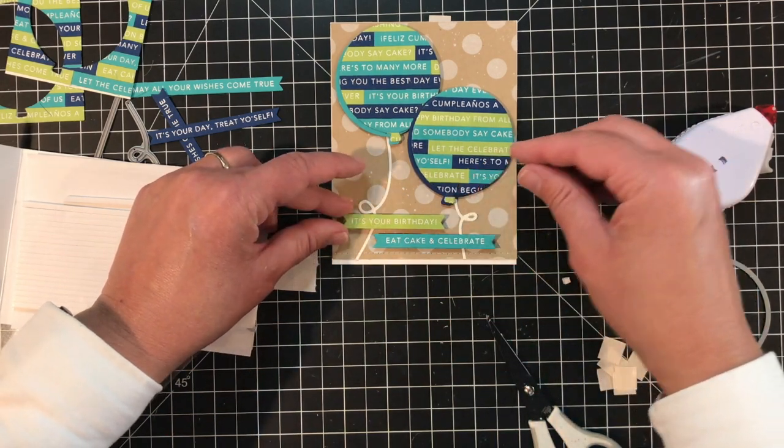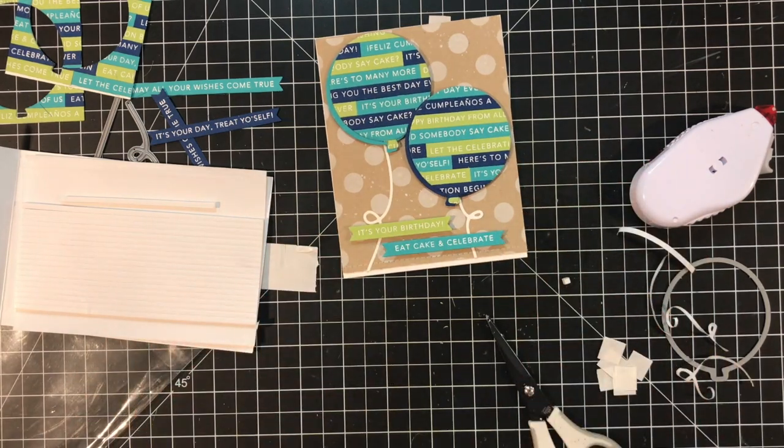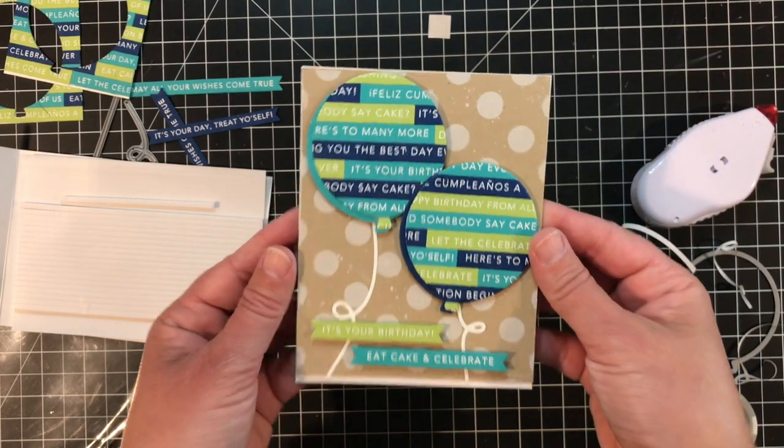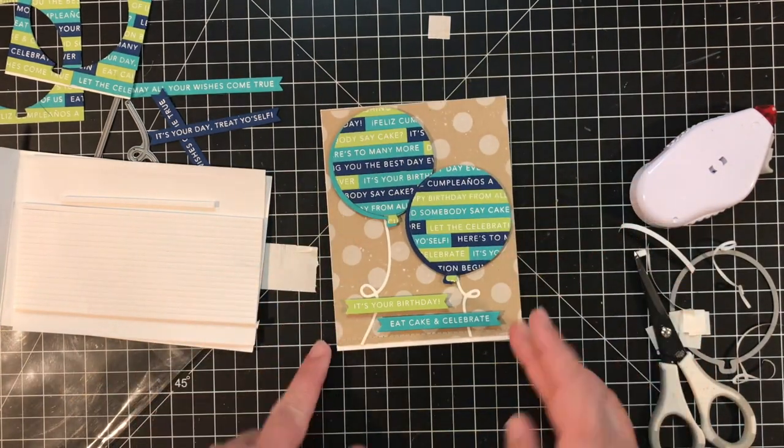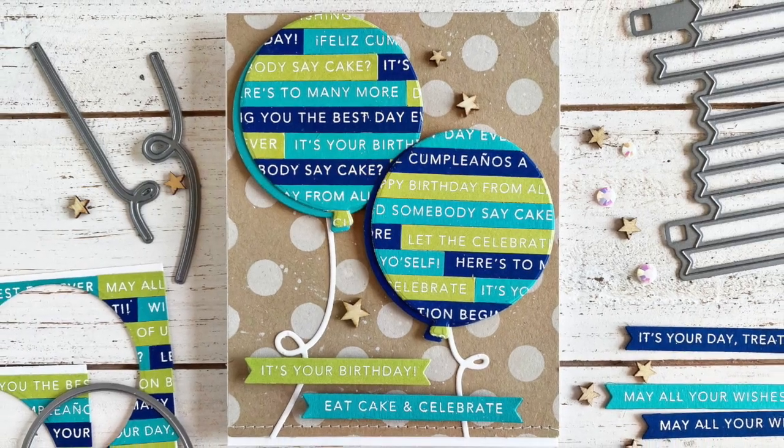You can use simple strips you already have in your collection that you've already stamped or stamp new ones for your project. You can find all of the simple strips products as well as the other supplies that I used to create this project in the tailored expressions web store at tailoredexpressions.com. Thanks so much for joining me everybody and I'll see you next time.